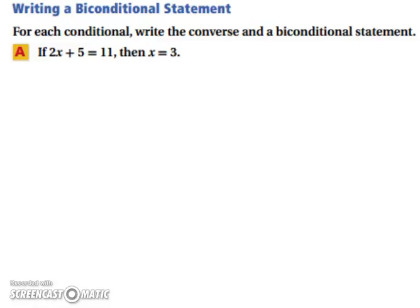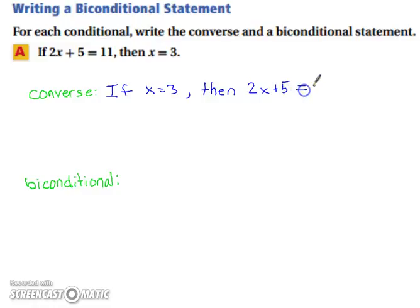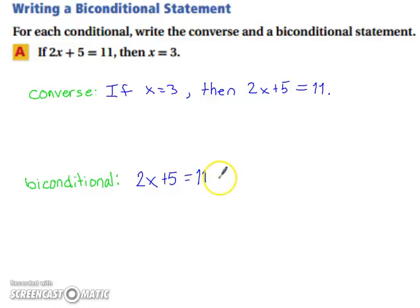Now let's try something a little different. For each conditional, write the converse and a bi-conditional statement. The converse of the given statement flips the hypothesis and conclusion: if x equals 3, then 2x plus 5 must equal 11. For the bi-conditional, remove the 'if' and replace 'then' with 'if and only if': 2x plus 5 equals 11 if and only if x equals 3.